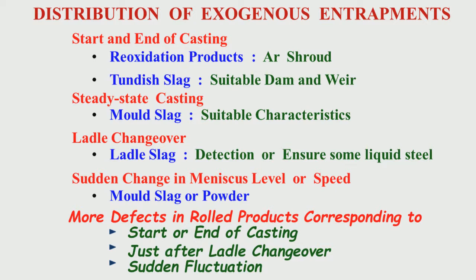Exogenous entrapments are not uniformly found in cast or rolled products. At the start or end of casting, there is a possibility of having reoxidation products, and argon shrouding is the solution. At the end of casting, there is also a possibility of tundish slag entering the mold if some amount of liquid steel is not allowed to remain in the tundish. Suitable dams and weirs allow liquid steel to remain in the tundish and prevent slag from getting into the mold.